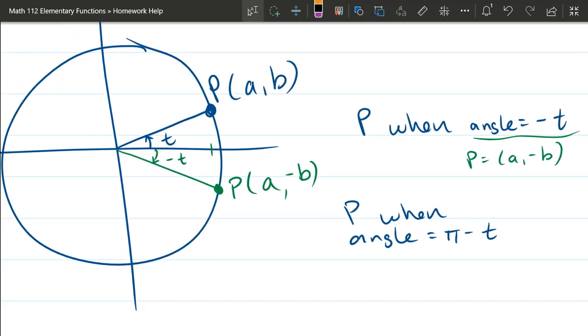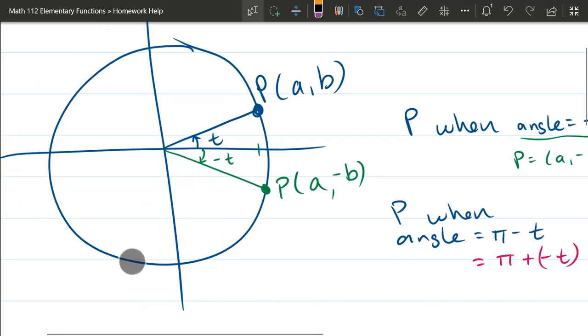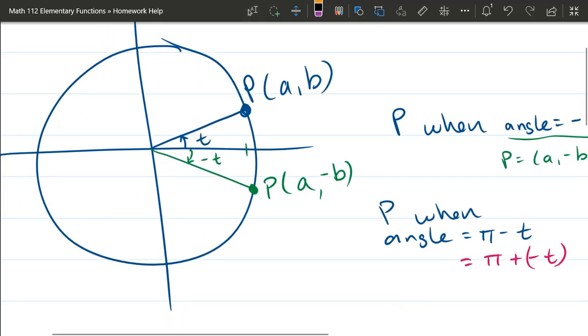All right. The other part of the question is what happens when we have pi minus t? So let's think of this as pi plus a negative t. When you add two angles together, you do the first rotation and then the second rotation. So on this graph, the first rotation, we can add either order. We could write it as negative t plus pi. So we'll just think in that order.